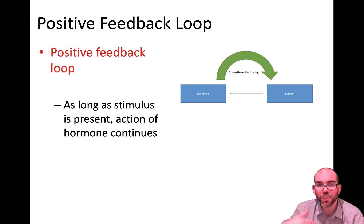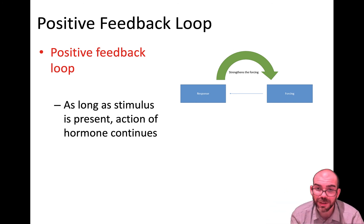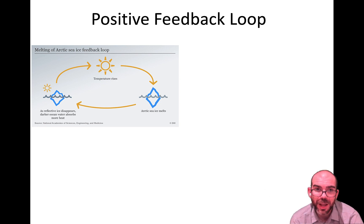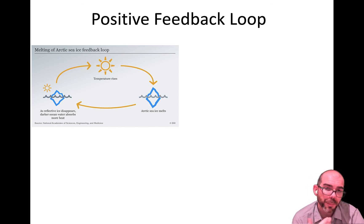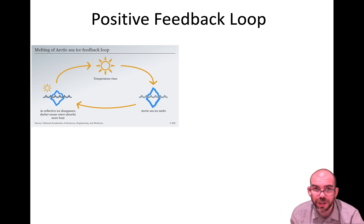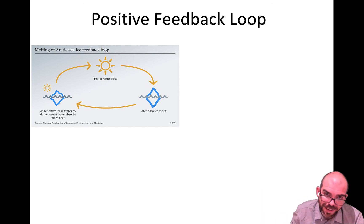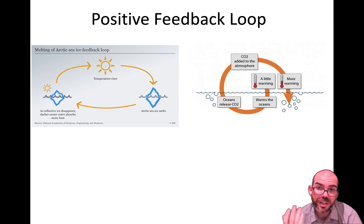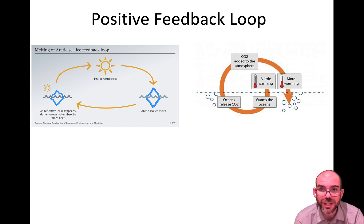With a positive feedback loop, as long as the stimulus is present, the response reinforces the effect. Here's one example: as temperatures get hotter on Earth, ice is melting. But ice is a really reflective surface, so when we have less ice, water absorbs more heat than before. But if we absorb more heat, we melt more ice — and if we melt more ice, we absorb even more heat. The effect reinforces the cause and the cause reinforces the effect. Similarly, as the ocean warms, it releases more CO2, but more CO2 in the atmosphere causes the ocean to warm further — these patterns are cyclical in a positive feedback loop.